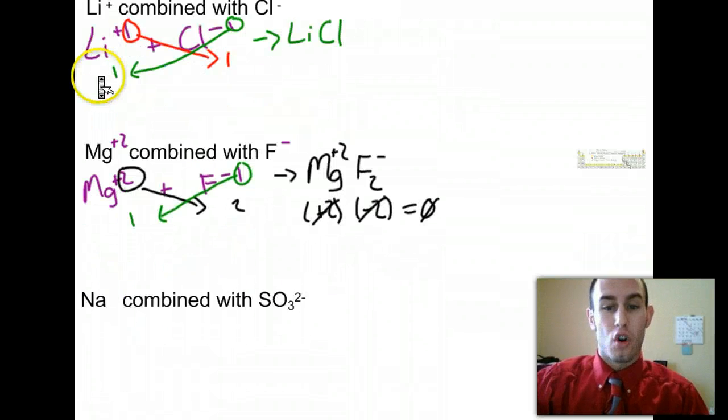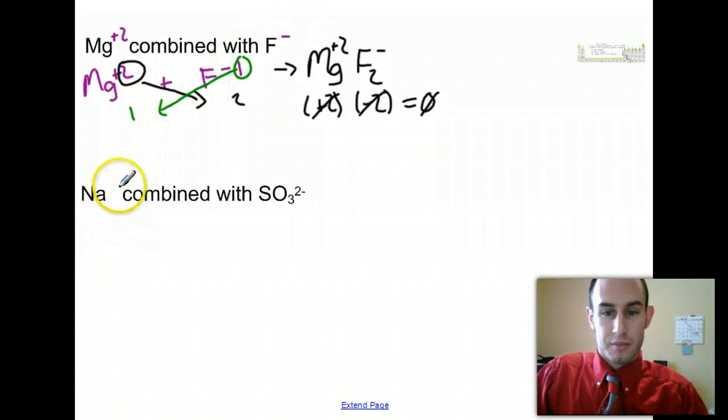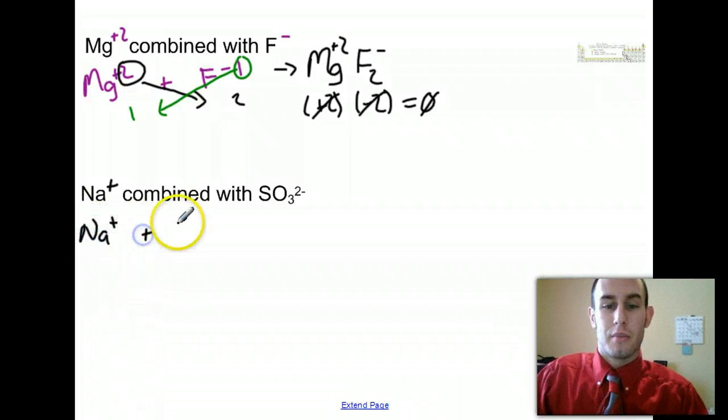And sulfite, you're actually given sulfite's charge as being minus two. So sodium is just a plus. So I have sodium plus one being combined with a SO32 minus. Now I always put all of my polyatomics in parentheses because I'm saying the compound has a two minus charge,